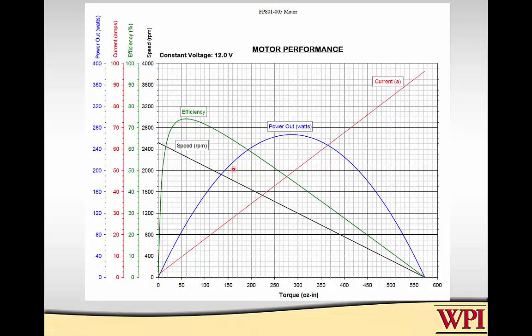The power curve is a parabola, because power output on a rotating shaft equals torque times angular speed. Over here you have high speed but no torque, so power output is zero. Over here you have high torque but no speed, so power output is zero again. If you do the calculus, maximum power occurs at one-half the stall torque and one-half the no-load speed.